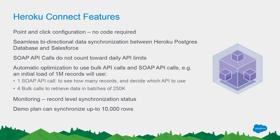Heroku Connect also automatically optimizes API calls between bulk and normal API calls. For example, if you need to load one million records, Heroku Connect will make one normal API call to count how many records, and then automatically do four bulk API calls to bring 250,000 records each. The optimization in terms of time and performance is managed automatically without you needing to worry about it. We can also monitor activities, monitor individual records, and monitor the synchronization status of when the last synchronization happened. We can also compare data between Salesforce and Heroku Connect at all times.